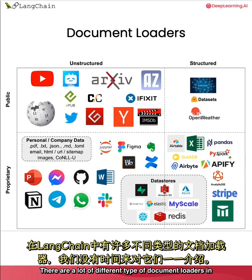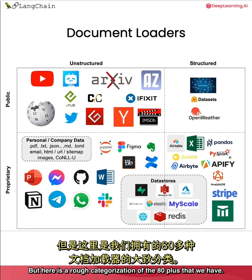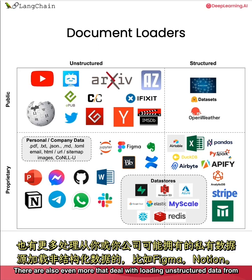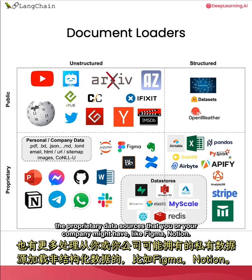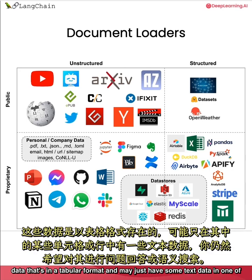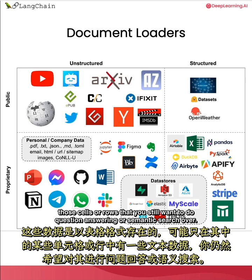There are a lot of different types of document loaders in Langchain — here is a rough categorization of the 80 plus that we have. There are a lot that deal with loading unstructured data like text files from public data sources like YouTube, Twitter, and Hacker News. There are also even more that deal with loading unstructured data from the proprietary data sources that you or your company might have, like Figma and Notion. Document loaders can also be used to load structured data — data that's in a tabular format that you still want to do question answering or semantic search over.